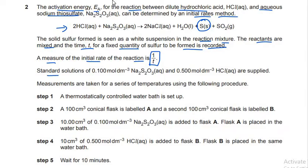The standard solutions of 0.1 mol per dm³ sodium thiosulfate and 0.5 mol per dm³ hydrochloric acid are supplied. Measurements are taken for a series of temperatures using the following procedure. We need to understand that the independent variable in this experiment is temperature — we are changing the temperature and measuring the time.